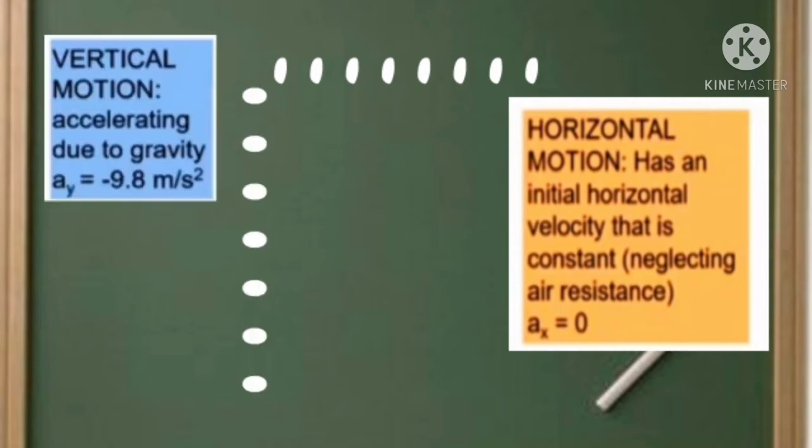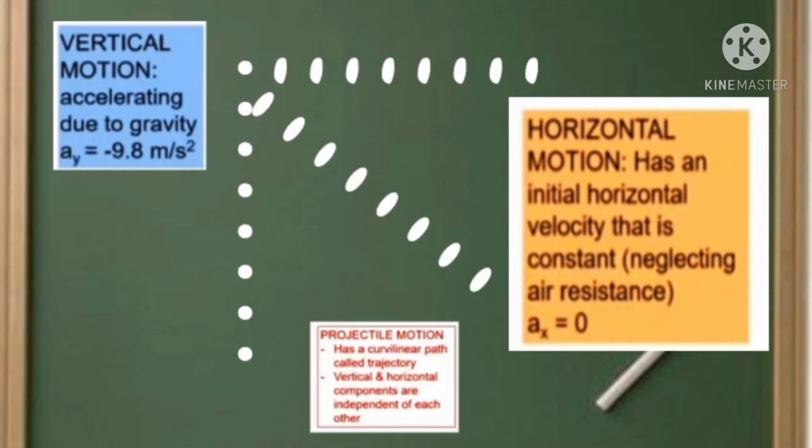Vertical motion. Accelerating due to gravity. Acceleration Y equals negative 9.8 meters per second squared. Projectile motion has a curvilinear path called trajectory. Vertical and horizontal components are independent of each other.